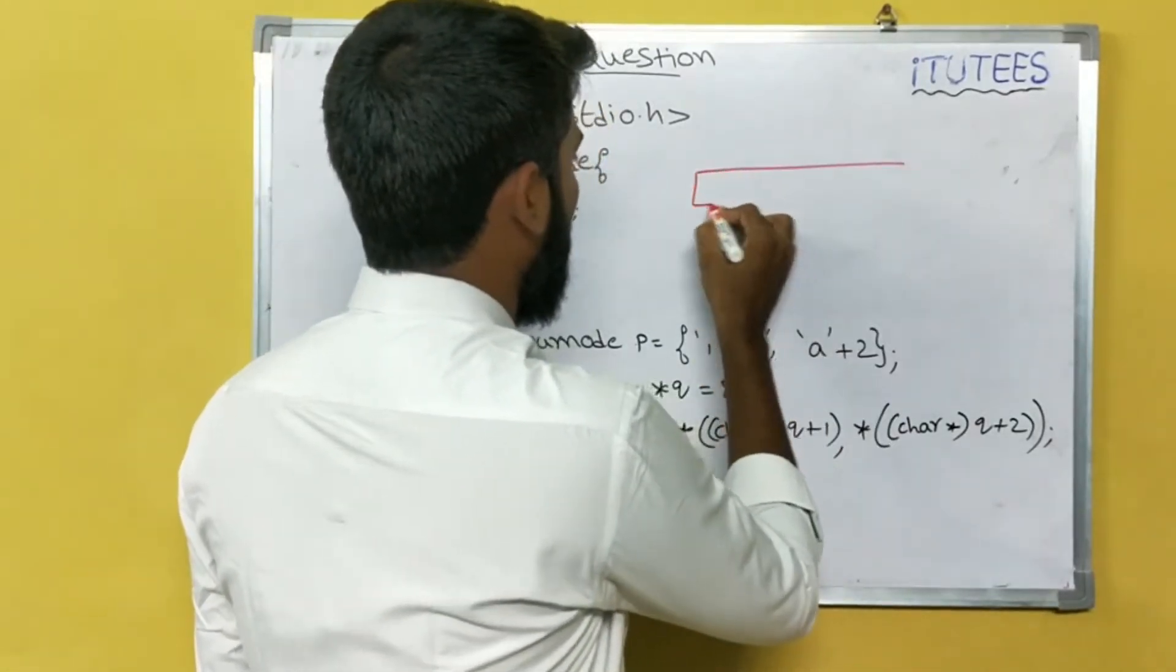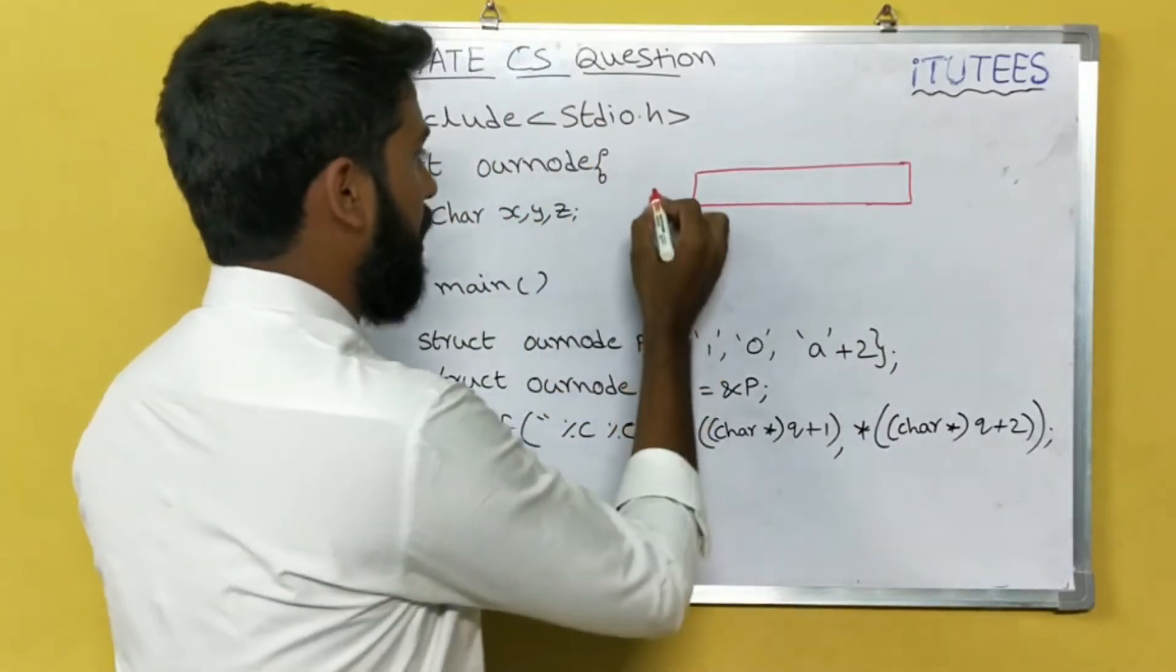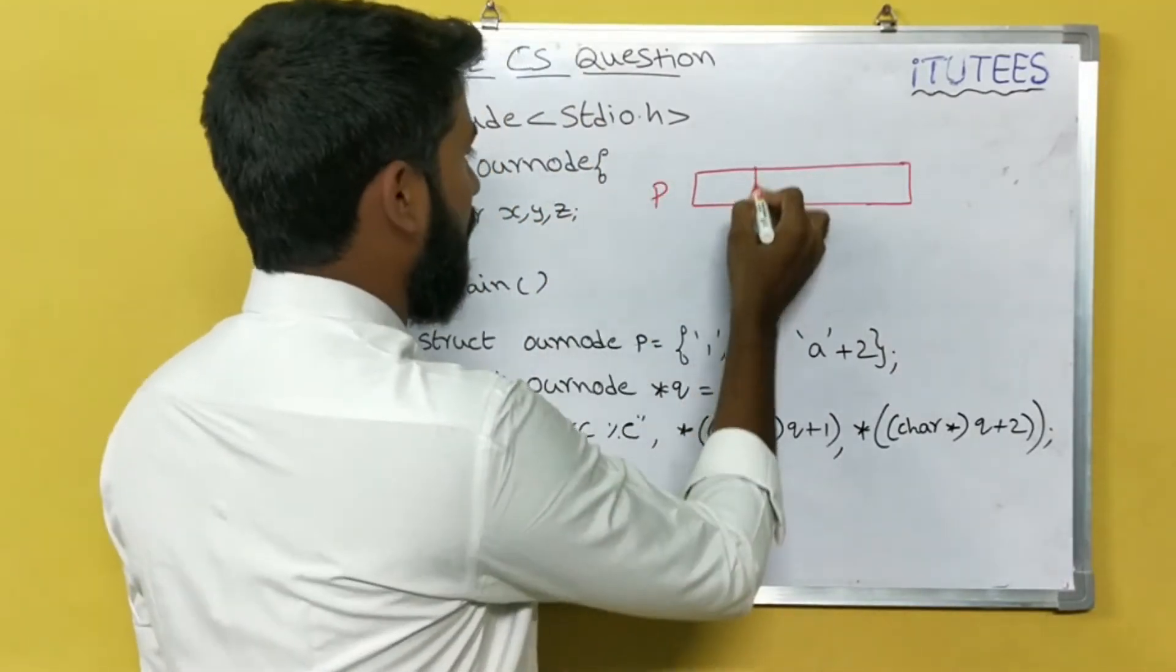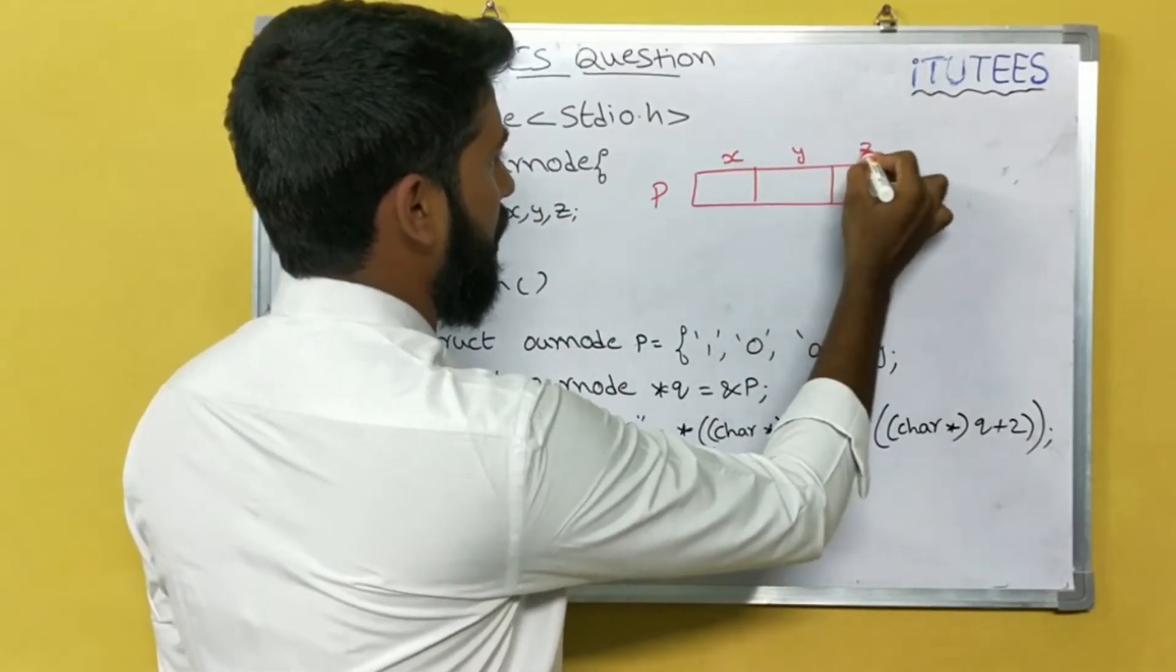So this is the structure. The structure name is P. It contains x, y, z. This is the x, this is the y, this is the z.